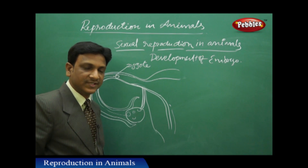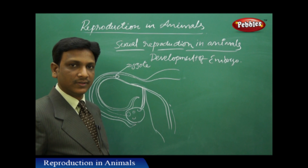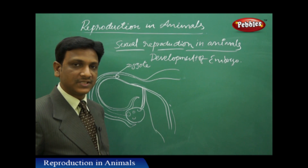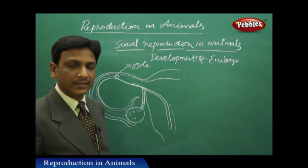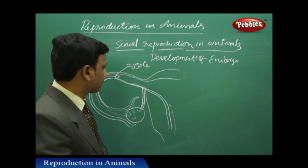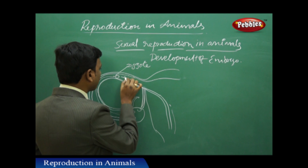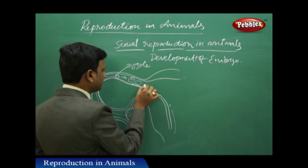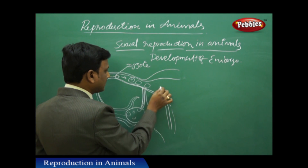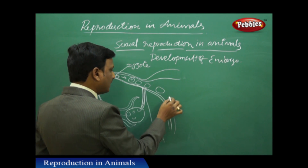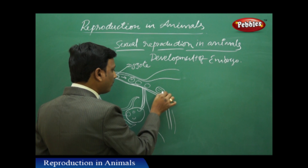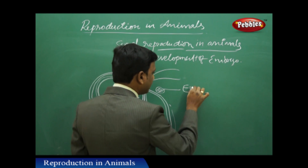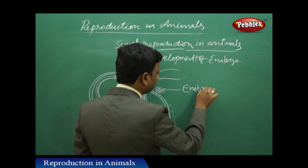Now what happens to this zygote? How does this zygote develop into a baby? The zygote, after formation, undergoes many divisions and forms a group of cells — a mass of cells. At this point, it is called an embryo.